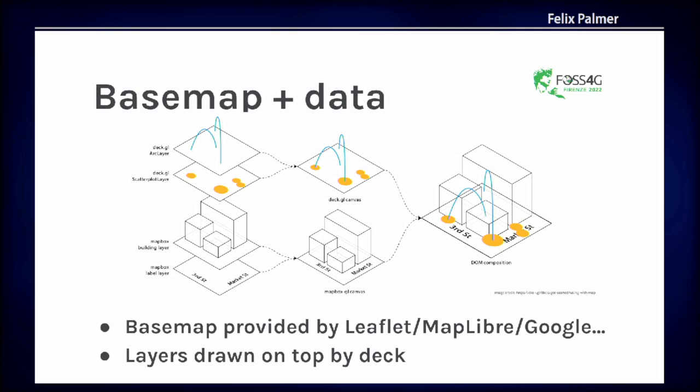Deck.gl draws these together onto one canvas. Separately, a mapping library — here the example is Mapbox — draws the streets, labels, and buildings. These two get linked together by the browser so it appears to be a seamless visualization to the user; they can't tell it's basically two libraries at the same time. A great use case this architecture gives us is the ability to swap out the base maps. You can build your application with Google Maps, and if the client later wants MapLibre instead, you can just swap that library out and everything still works.